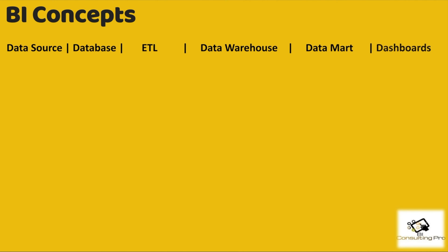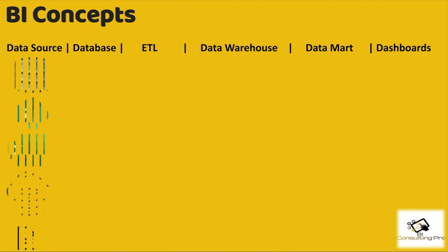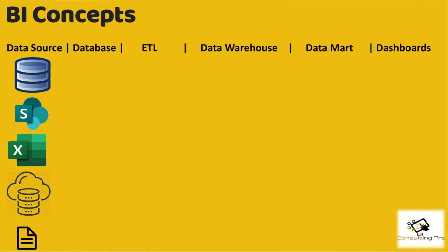For everything in BI, we need data. The data can be raw data or data already available in databases or systems. The first concept is the data source. Data sources are the sources from where an organization gets its data, and they can be multiple types — databases, SharePoint, Excel files, cloud-based systems, or flat files.